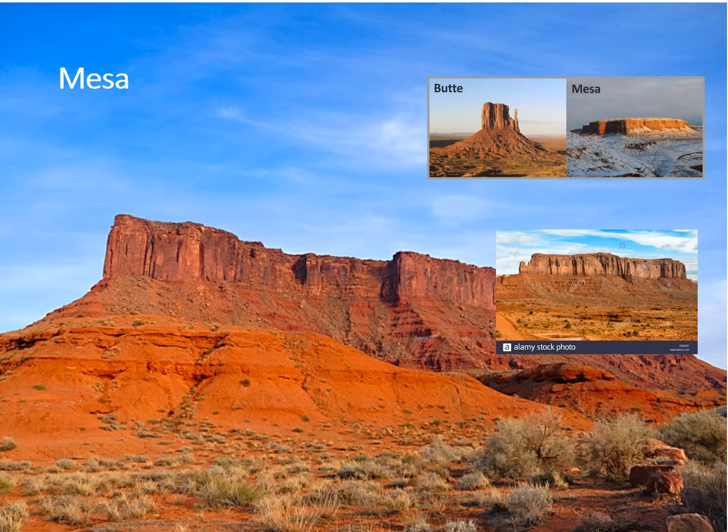Here is a mesa. A mesa is not a plateau — mesas are much smaller than plateaus. Plateaus can be really, really big. Like basically the Texas Hill Country is part of the Edwards Plateau, which includes all of Austin and surrounding cities — everything north of San Antonio is part of the Edwards Plateau. A mesa is a lot smaller than that, like the size of Memorial. A mesa can eventually erode to become buttes.